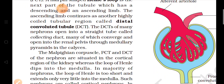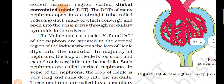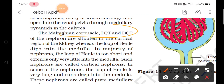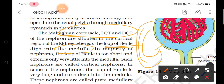The collecting duct opens into the renal pelvis. The Malpighian corpuscles — meaning the glomerulus and Bowman's capsule — along with the PCT and DCT, are all present in the cortical region of the kidney. The Loop of Henle is present in the medulla region. So in the cortex these parts are present, and in the medulla the Loop of Henle is present.